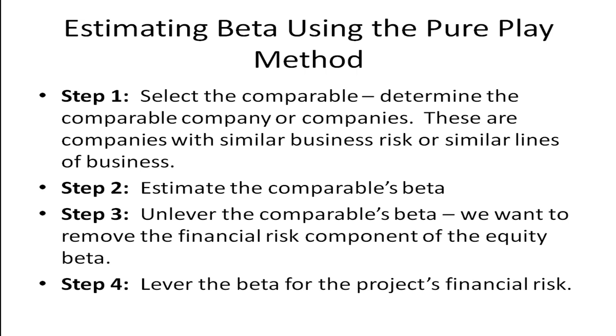How do we do this approach? Well, there are several steps. First, we want to select the comparable company. We may choose one company or several companies. If we can find several companies in the same line of business or several companies that are similar to ours, then we may choose several and take an average of their betas. And we want them to have a similar level of risk or similar lines of business.